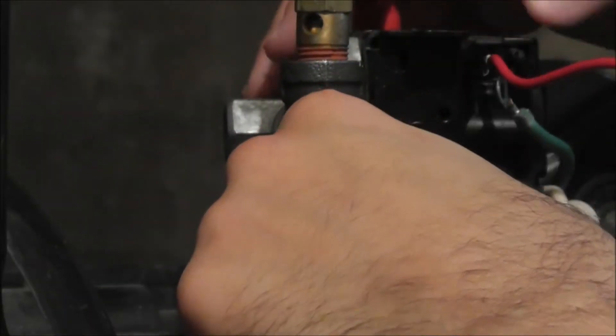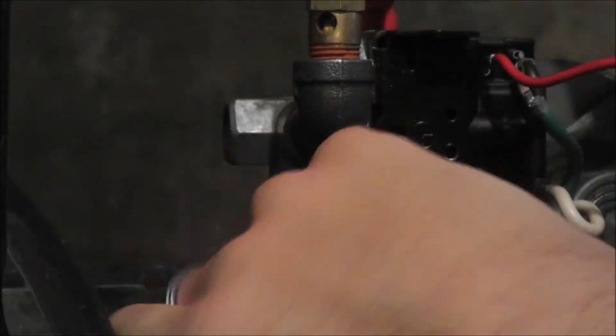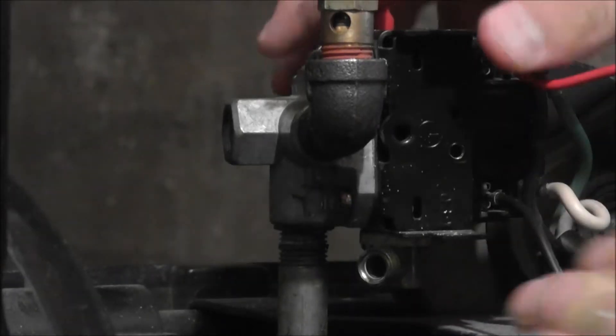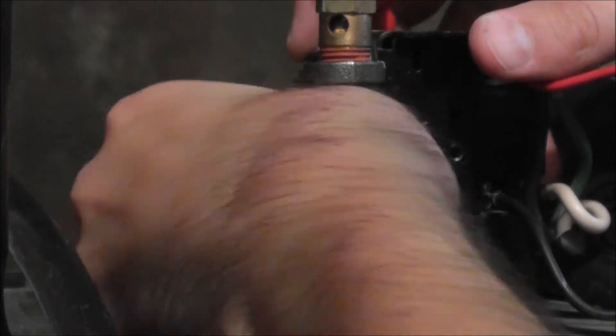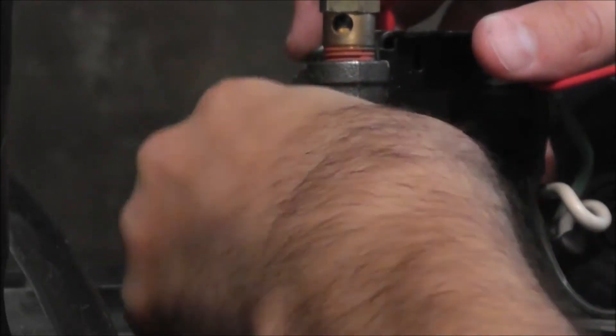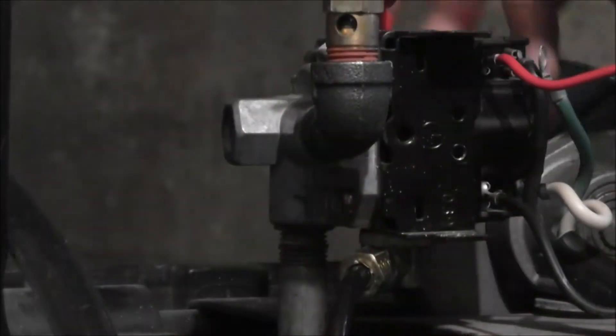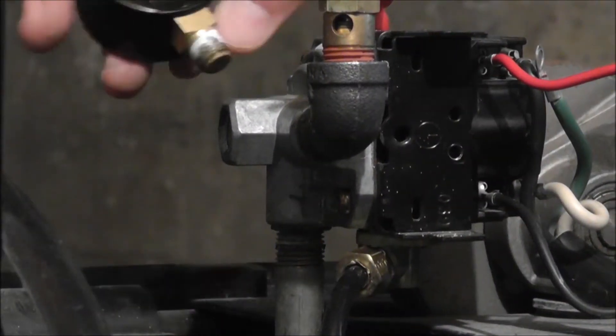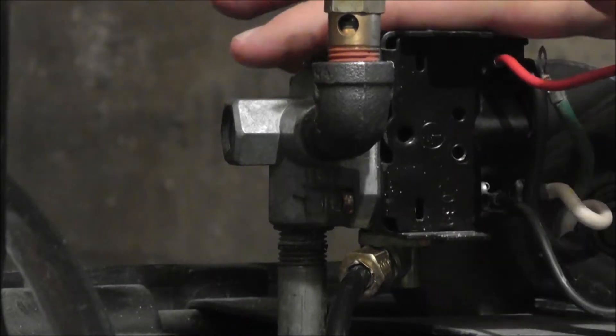So once you do have that installed, and again, I have the unloader line off here—it goes to the unloader valve and the pressure switch. You'll need to connect that next. Here you'll see the unloader valve, which unloads all the excess pressure off the line. Once it shuts off, simply attach that back with a quarter-inch compression nut onto the valve itself, and there you have it. And then you want to simply reattach your pressure gauge and all the components that you had taken off.